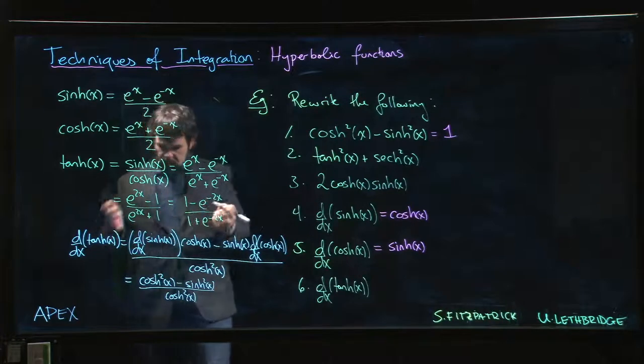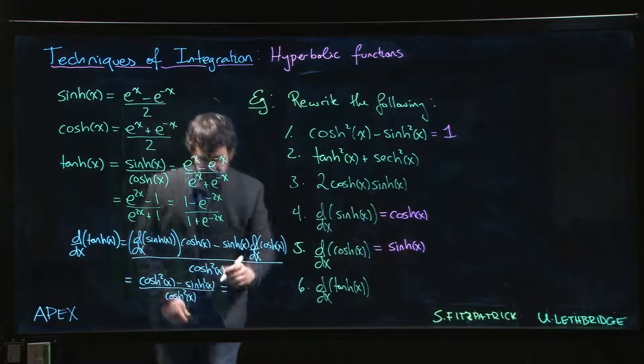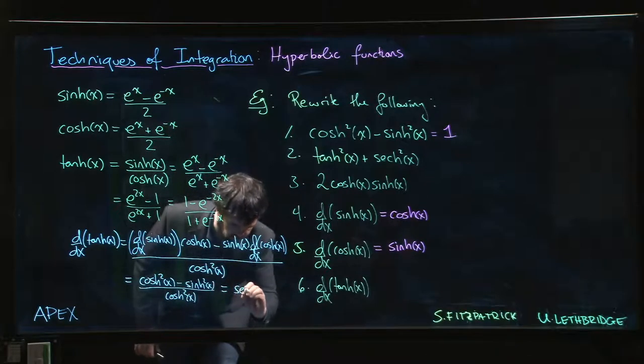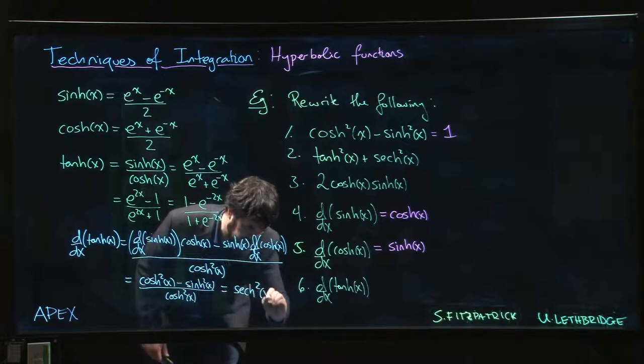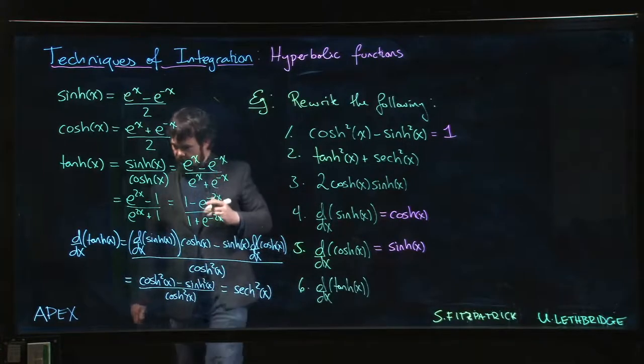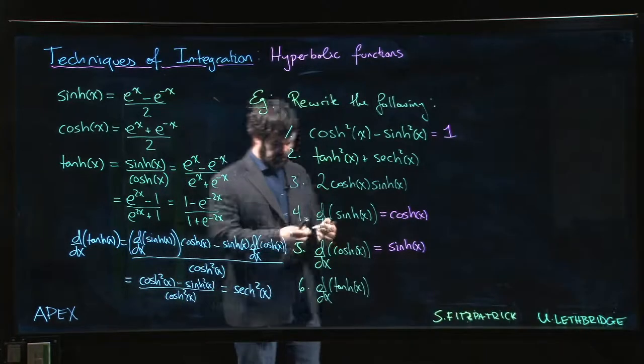hyperbolic cos squared. And just like with trig functions, one over cos we call secant, so this is secant hyperbolic squared. So the derivative of tan is secant squared, just like it was for trig functions. Very cool.